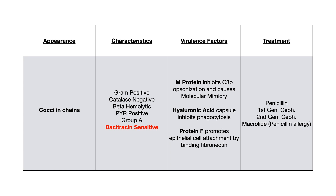Summary: Strep pyogenes is a gram-positive, catalase-negative, beta-hemolytic, PYR-positive, Group A, bacitracin-sensitive coccus occurring in chains. High-yield virulence factors: M protein (molecular mimicry → rheumatic fever via cardiac myosin cross-reactivity), hyaluronic acid capsule (inhibits phagocytosis), and Protein F (binds fibronectin for epithelial attachment). Treatment is penicillin. Remember your F's and M's, and build those clinical connection networks.